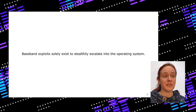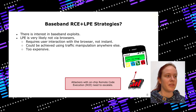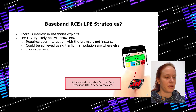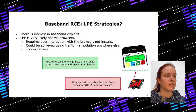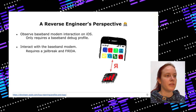Really, baseband exploits only exist to escalate from the chip into the operating system. If it's not via the browser, then there must be some interface between the chip and the operating system where something is exploitable, allowing privilege escalation from the chip into the system. These interfaces are also very interesting from a reverse engineer's perspective — even if you don't want to attack anything, just understanding how they work is also a goal of this work.